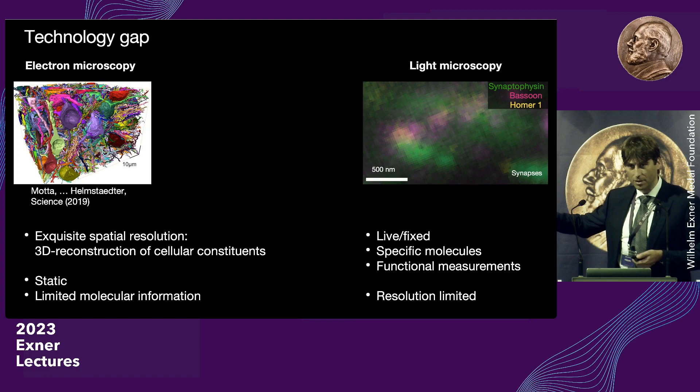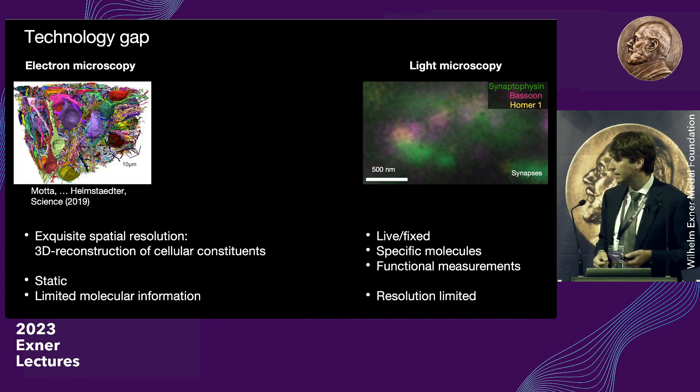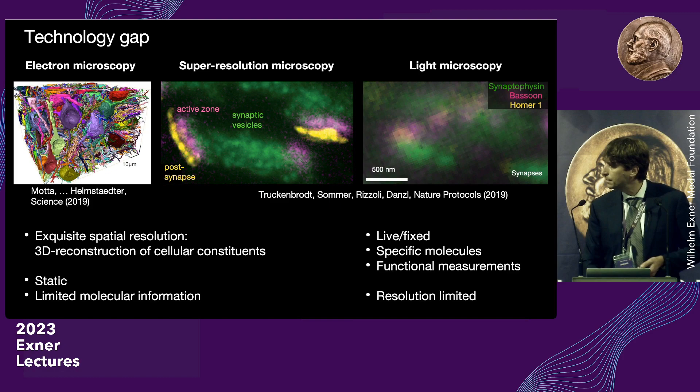However, electron microscopy is static and it's fairly hard to get access to molecular information. On the other side, there is light microscopy, which can be applied to living and fixed — meaning preserved — specimens alike. It's very straightforward to get information on specific molecules and on the activity of brain cells. However, as you can see quite drastically, resolution is severely limited. So super-resolution microscopy closes this gap progressively.